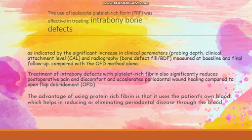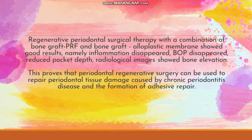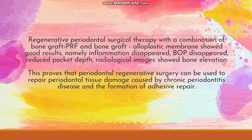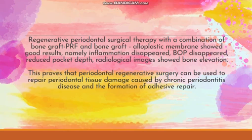The advantage of using platelet-rich fibrin is that it uses the patient's own blood, which helps in eliminating periodontal disease through the blood. Regenerative surgical therapy with a combination of PRF and bone graft with alloplastic membranes showed good results: inflammation disappeared, BOP disappeared, reduced pocket depth, and radiological images showed bone elevation. This proves that periodontal regenerative surgery can be used to repair periodontal tissue damage caused by chronic periodontitis and the formation of adhesive repair.